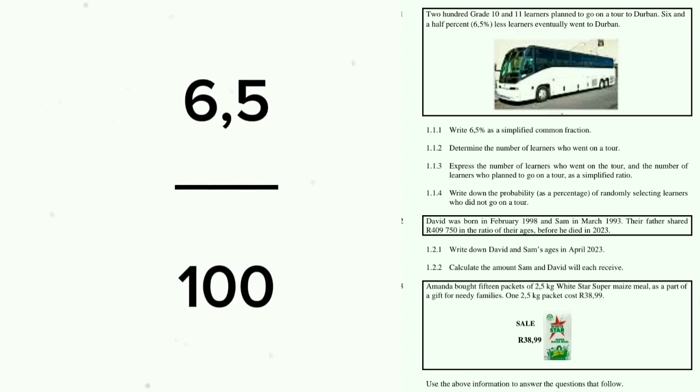Question 1.1.1: Write 6.5% as a simplified common fraction. The context is that 200 Grade 10 and 11 learners planned to go on a tour to Durban, and 6.5% fewer learners eventually went. To write 6.5% as a simplified common fraction, you simply write 6.5 divided by 100.